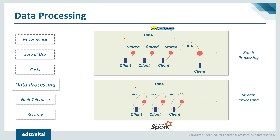There are two types of data processing: batch processing and stream processing. Batch processing is working with high data volumes collected over a period — data is first collected, then processed, and results are produced at a later stage. It is efficient for processing large static datasets, generally used for archived data, such as calculating average income of a country or evaluating e-commerce change over the last decade. Stream processing is the current trend: the need for speed and real-time information is what stream processing provides, and it has seen rapid growth in demand.